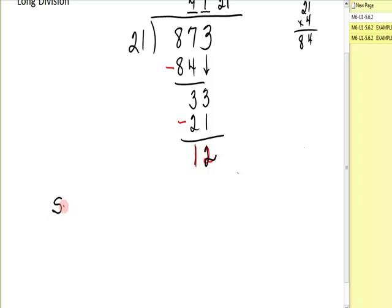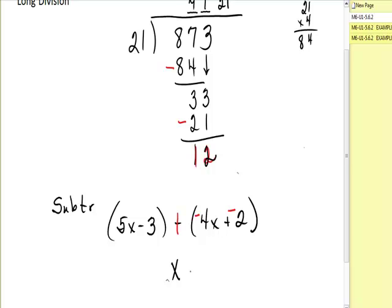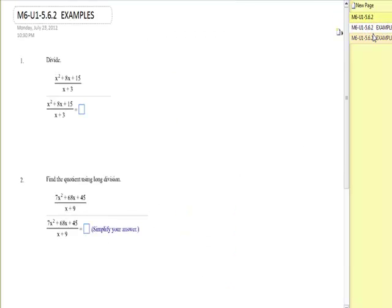Let me remind you about subtraction with polynomials. If you had 5x minus 3, and you were subtracting 4x plus 2, you would keep this one, change to addition, and change the signs. Then you would combine like terms. That would give you x minus 5. So kind of keep that in mind as we look at our examples for long division.